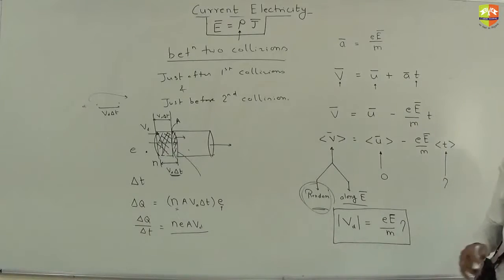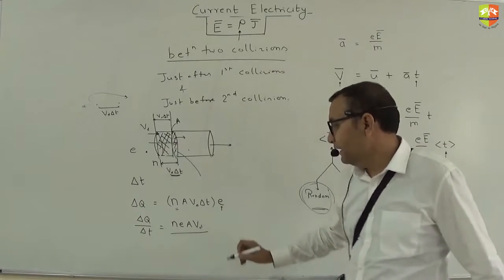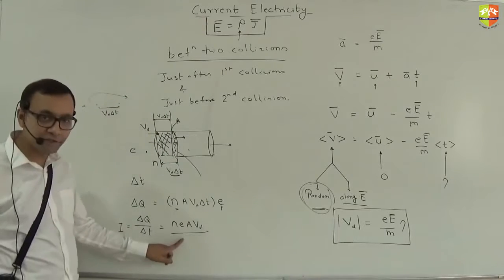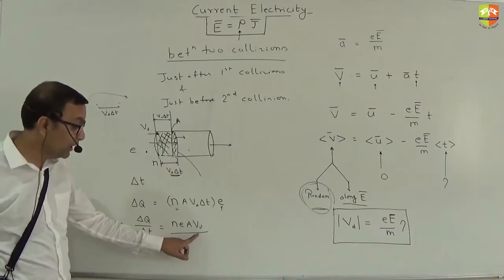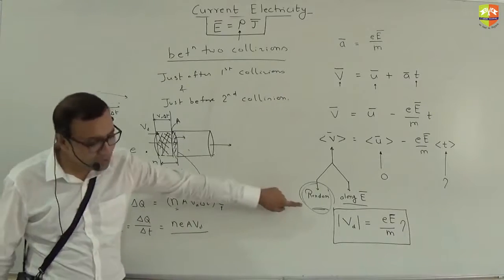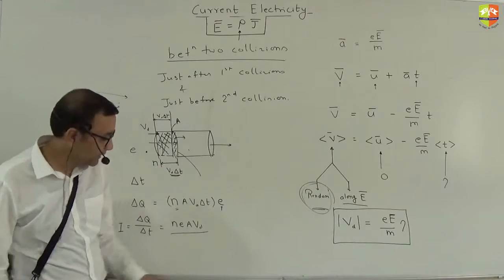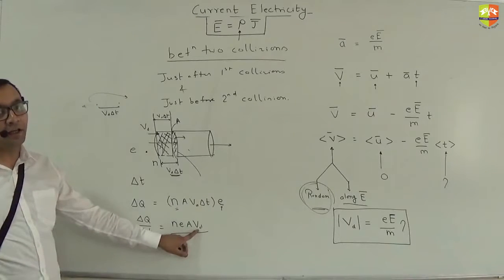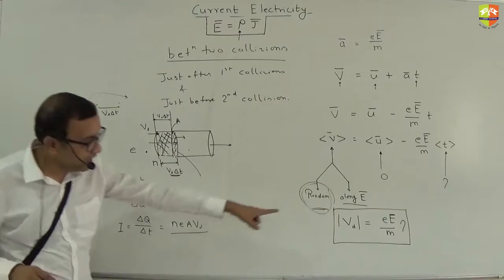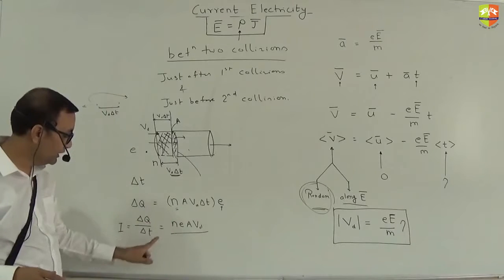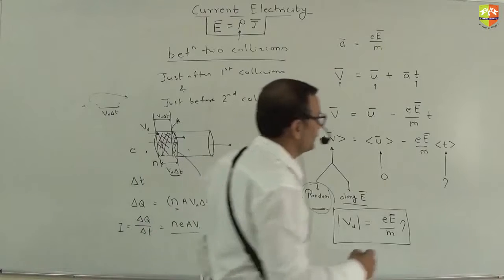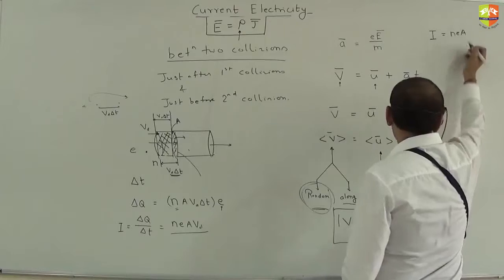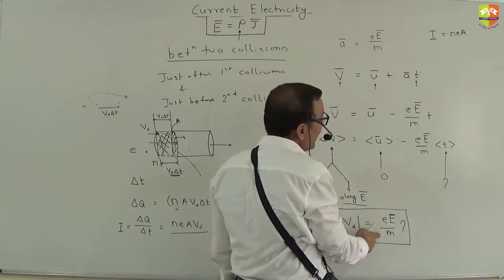We have current in terms of drift velocity. We should understand why we needed v_d — to express current in terms of microscopic factors. Now substituting v_d = eEτ/m into I = nеAv_d, current becomes I = n × e × A × (eEτ/m) = ne²AEτ/m.